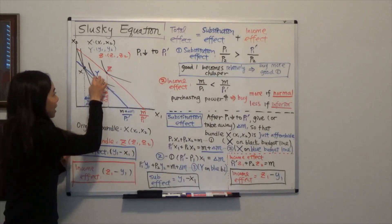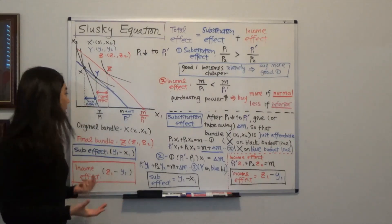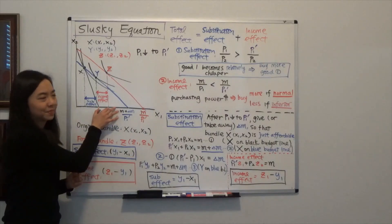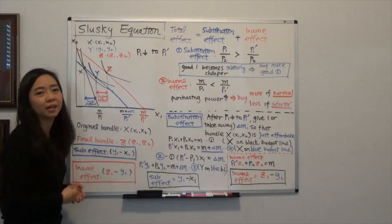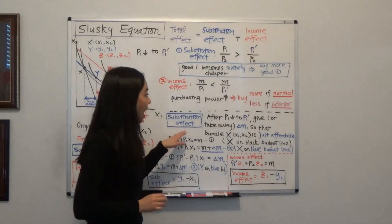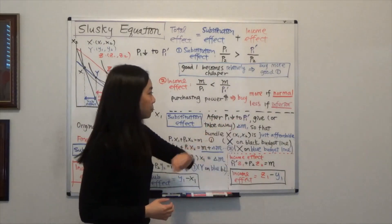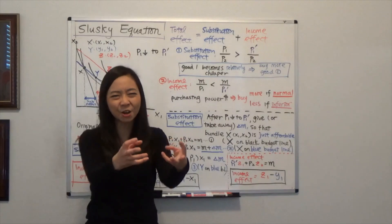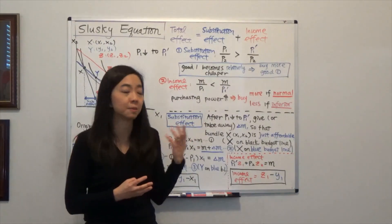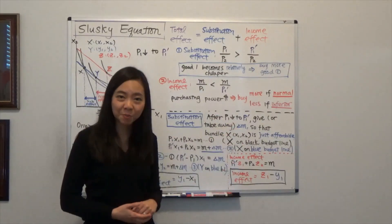As long as we can find bundle Y, we'll be able to find out what the substitution effect and income effect are. So how can we find Y? After the price goes down from P1 to P1 prime, we are going to take away some money from you — say, delta M. That's the amount of money we're going to take away from you, and delta M is a negative number.